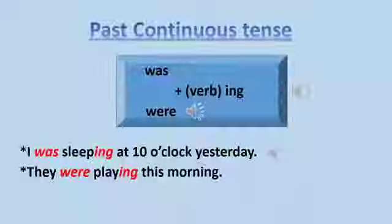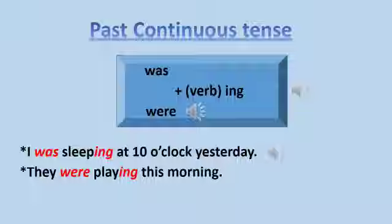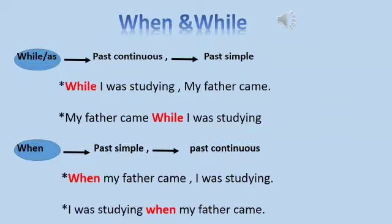We use when and while to join two sentences, and each sentence has a different tense. We use the past continuous to describe the background, and the past simple reports the sudden event.